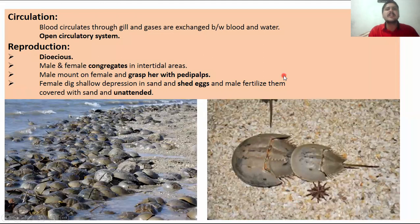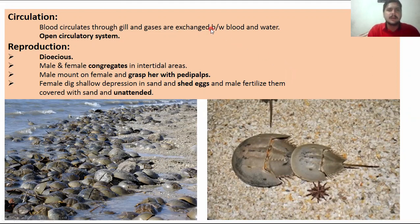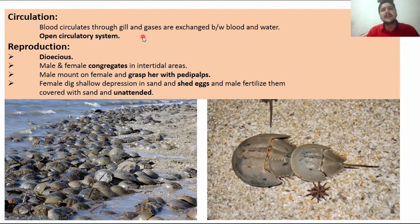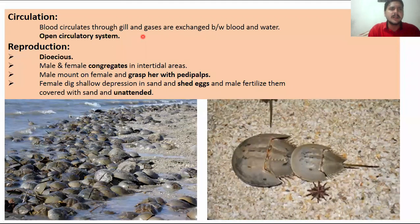Regarding circulation, horseshoe crabs have an open circulatory system, meaning the blood directly bathes every tissue of the body. Blood circulates through the gills where gas exchange occurs between the blood and water.